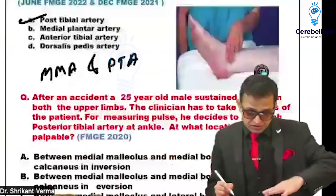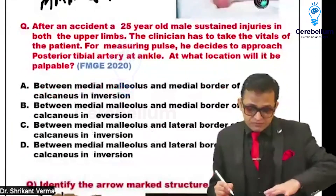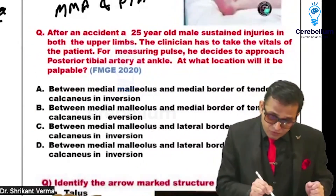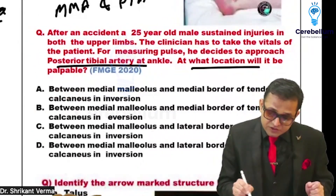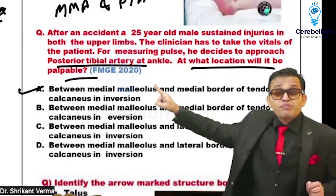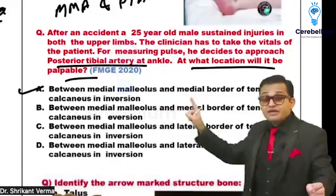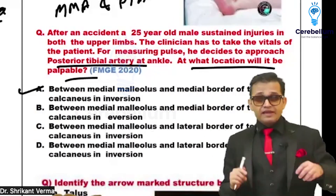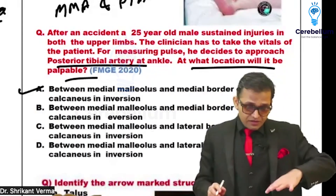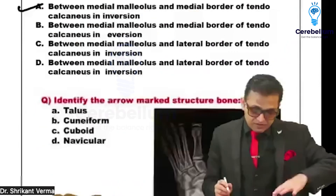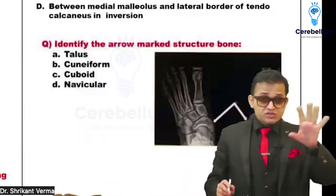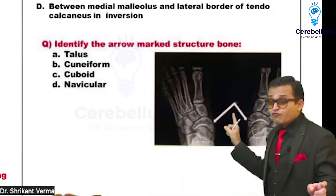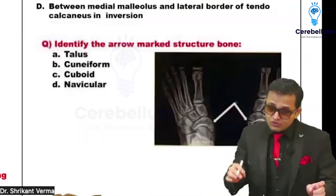The posterior tibial artery is palpated behind the medial malleolus, at the medial border of the tendo calcaneus. This is tested in inversion. We are going to see all this theory.